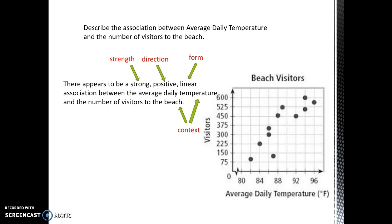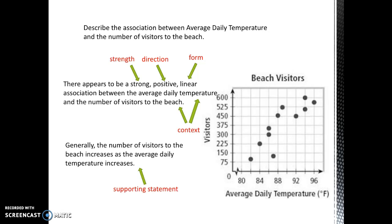You must also include a supporting statement that describes how the variables are moving together. Generally, the number of visitors to the beach increases as the average daily temperature increases. Notice how I included the word 'generally,' because it is not always true. For example, when the average daily temperature was 94 degrees there were 600 visitors, but as the temperature increased to 96 degrees, the number of visitors actually decreased to about 565. The supporting statement describes the general overall pattern, so be sure to include the word 'generally,' because without it your statement is false.